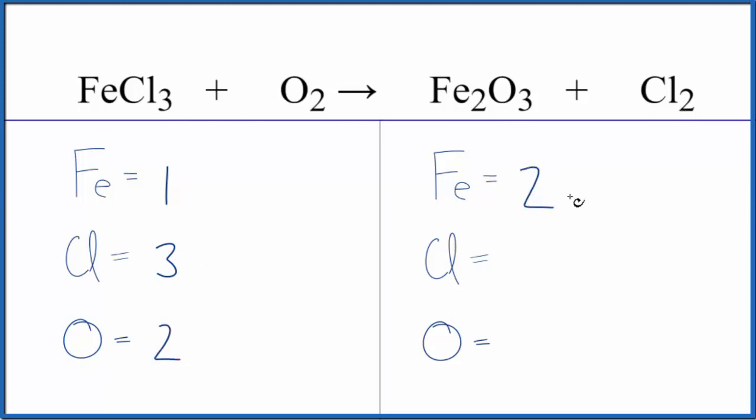Two iron atoms here, two chlorines, and then three oxygen atoms. Let's leave the oxygen to last, especially since it's by itself here, and let's just put a 2 in front of the iron 3 chloride.